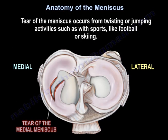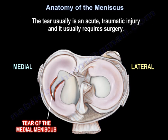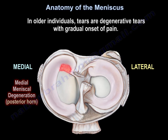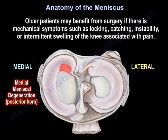Tears of the meniscus occur from twisting or jumping activities, such as in sports like football or skiing. The tear is usually an acute traumatic injury and typically requires surgery. In older individuals, tears are degenerative with gradual onset of pain. Older patients may benefit from surgery if there are mechanical symptoms such as locking, catching, instability, or intermittent swelling of the knee associated with pain.